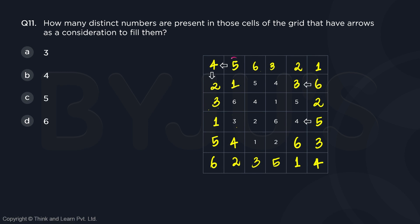Okay, so this cell has 5, this cell has 4, this cell has 2. So we have 2, 4 and 5, 3 numbers here.